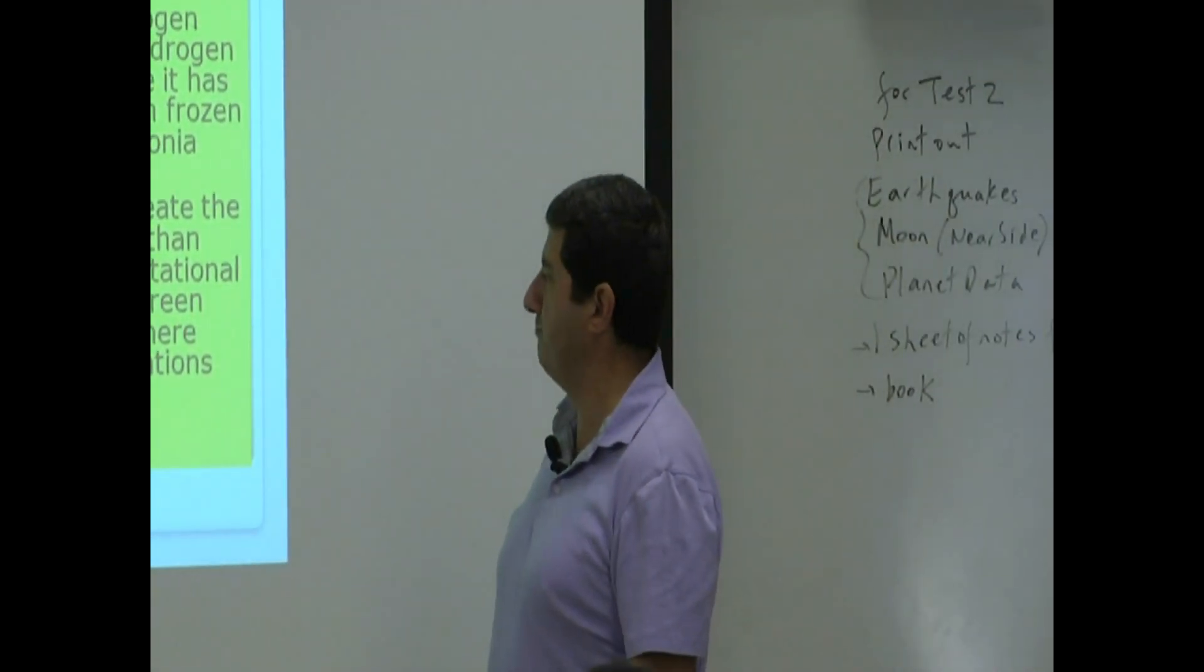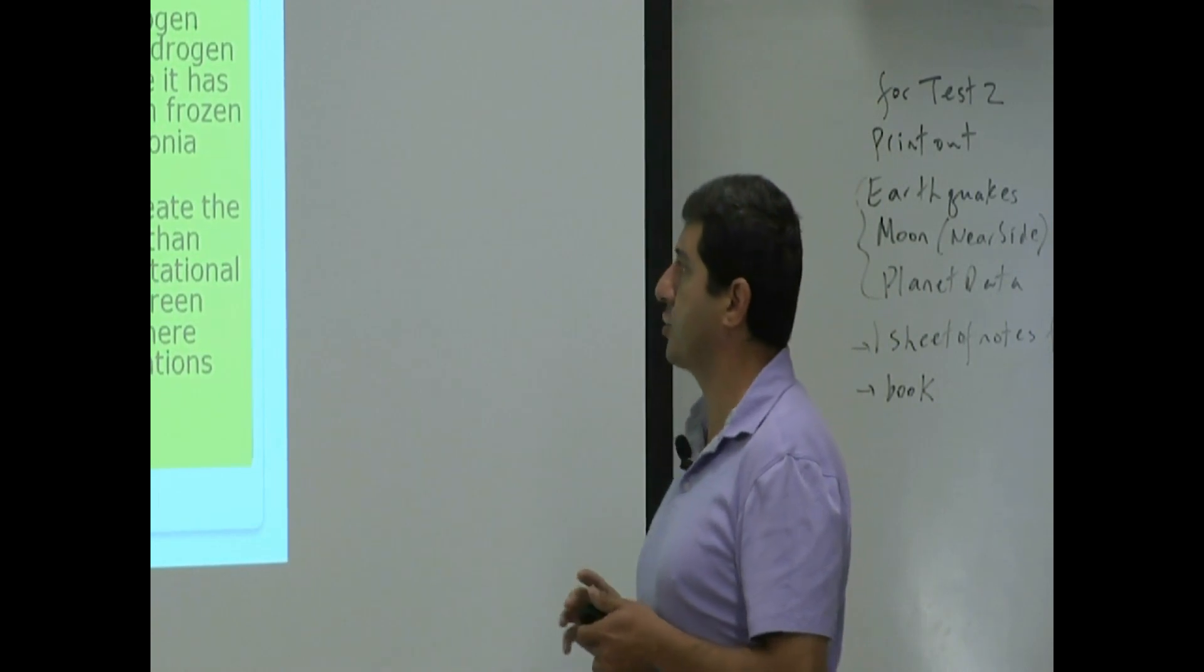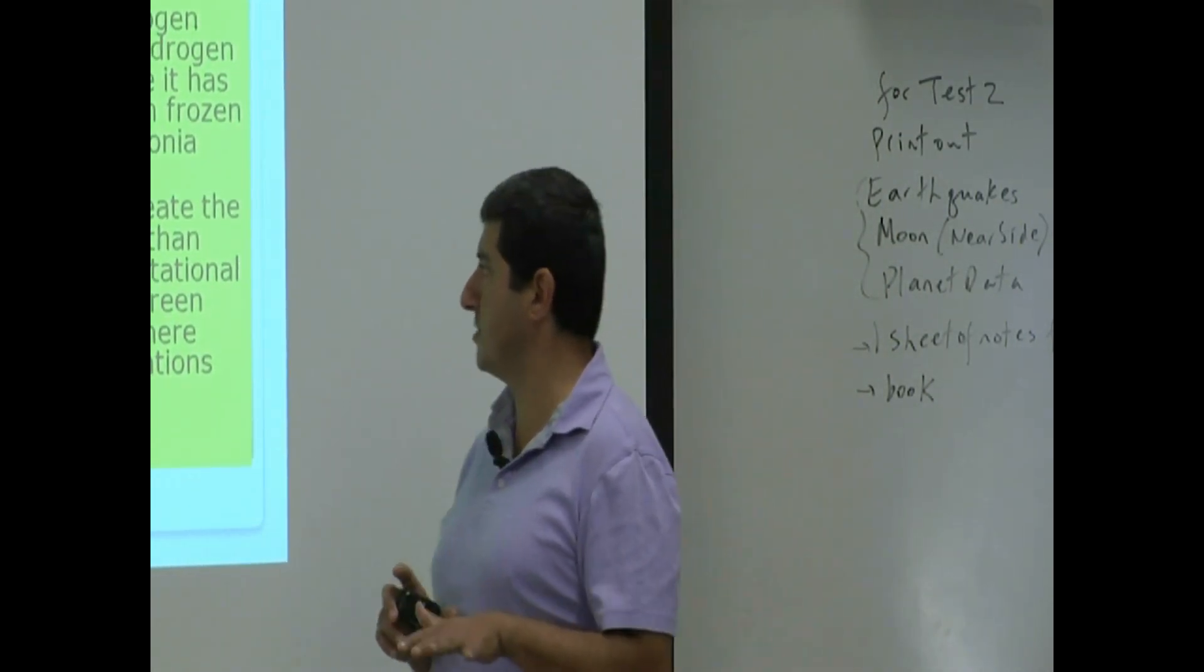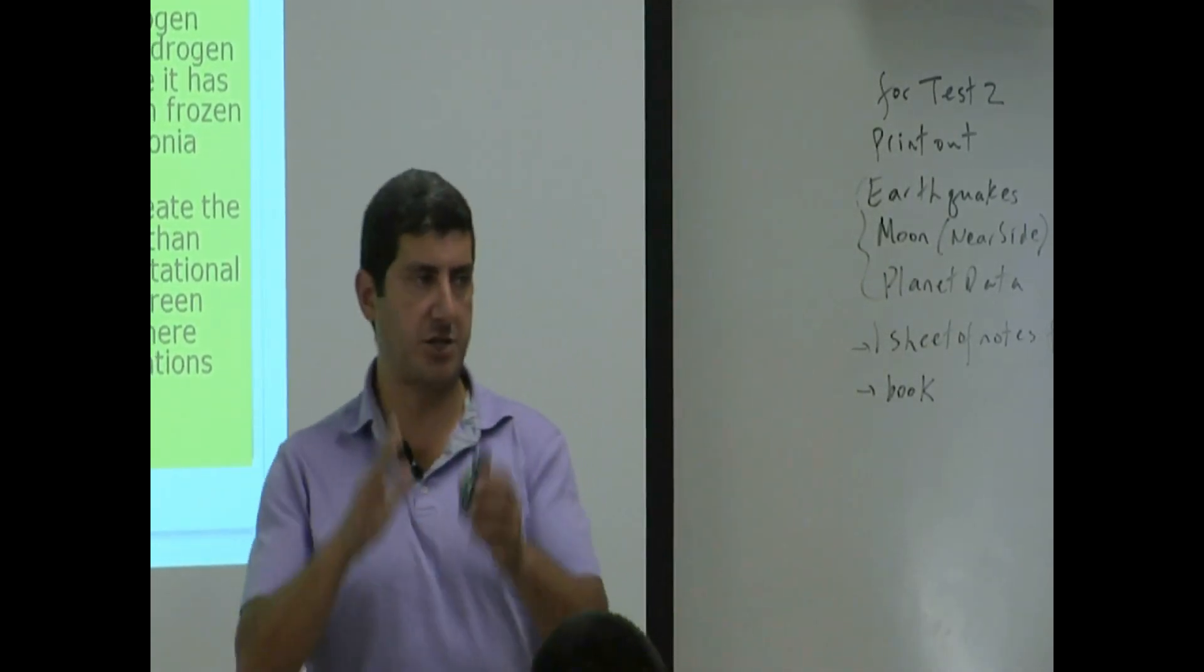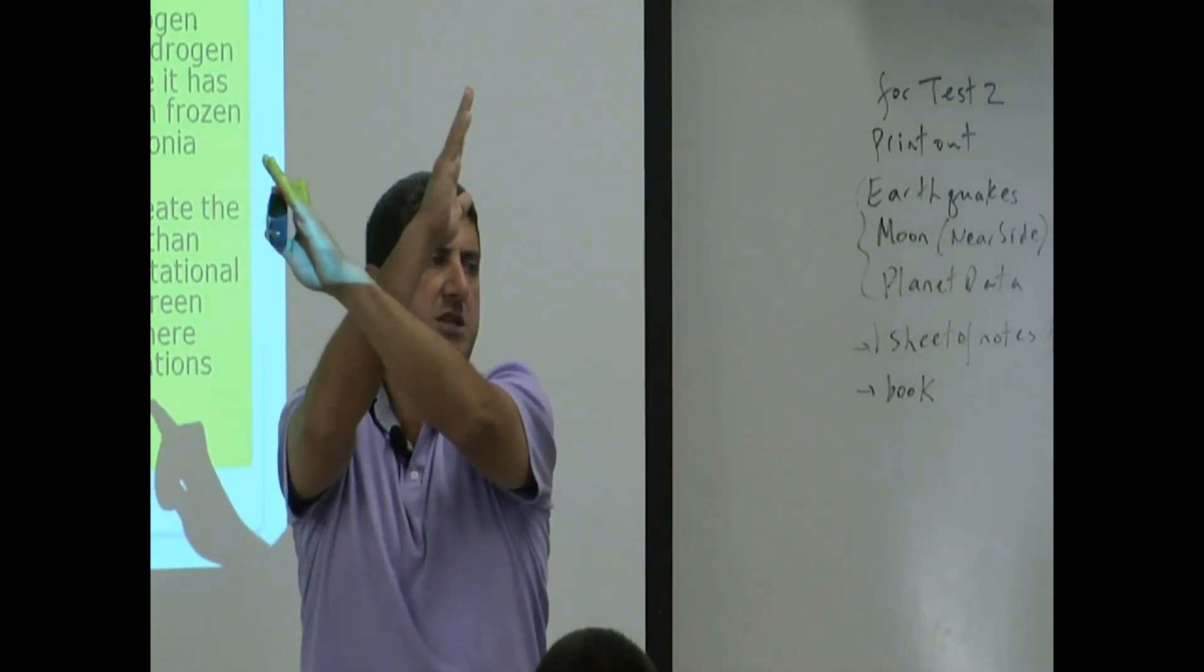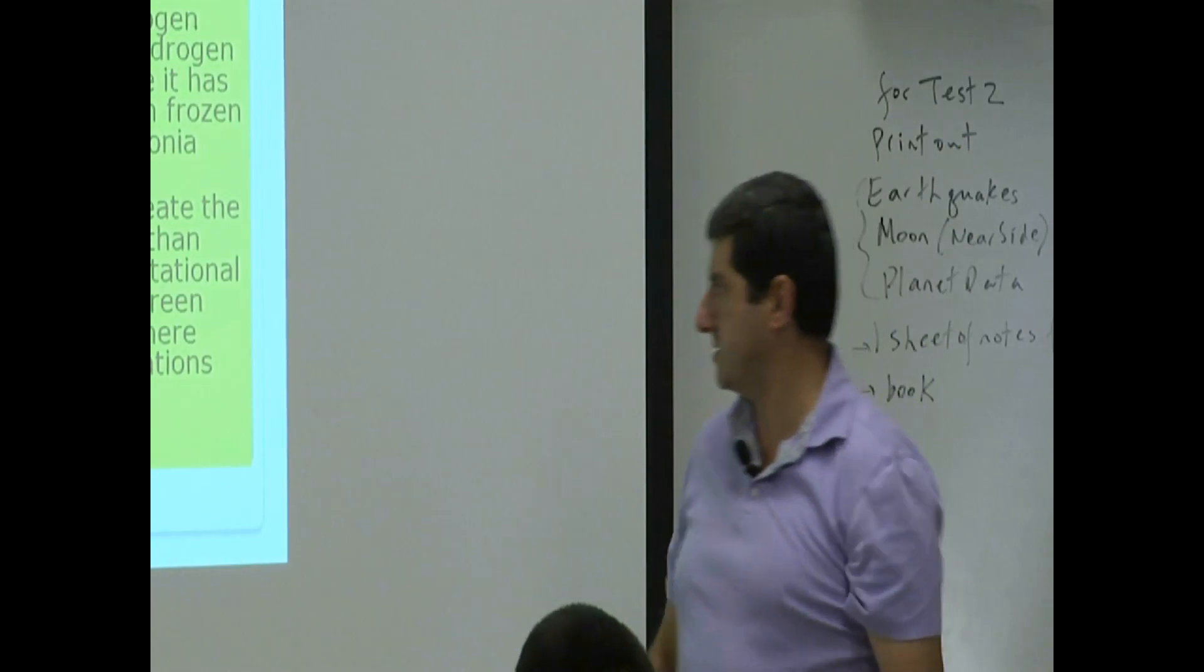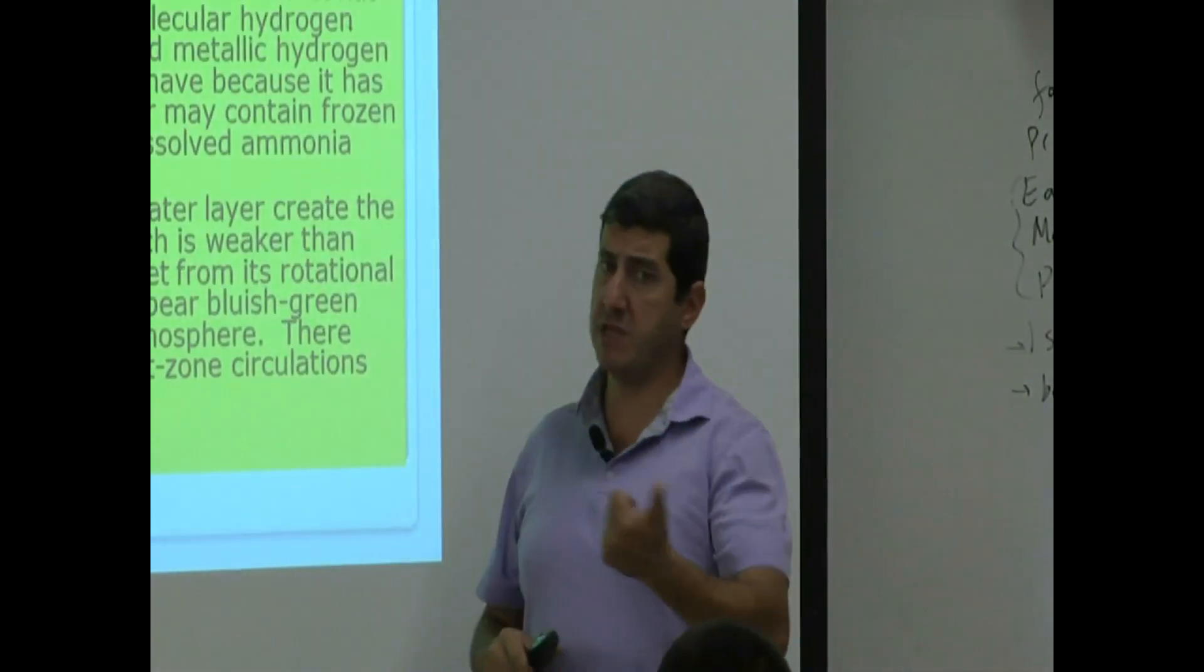Convection currents in this water layer create the magnetic field of Uranus, which is weaker than Jupiter's and very highly offset from its rotational axis. So its rotational axis might be something like this, its gravity, its magnetic axis might be highly offset from it.